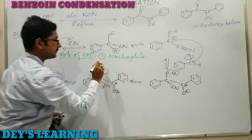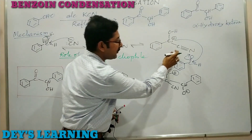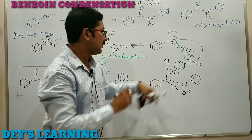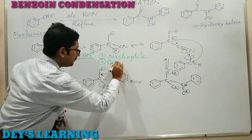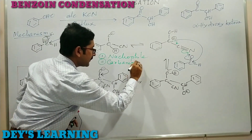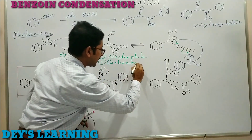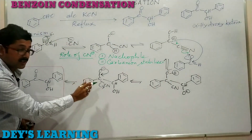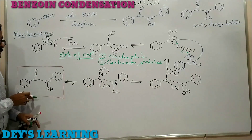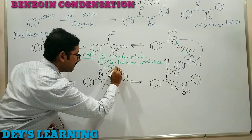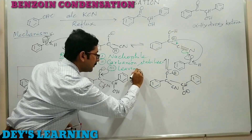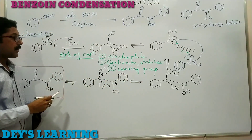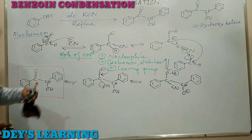In the second step, the cyanide ion stabilizes the negative charge — it is a carbanion stabilizer. In the last step, CN⁻ leaves to yield the product, so it acts as a leaving group. These three unique characteristics make the reaction a success, and CN⁻ is very specific for this reaction.